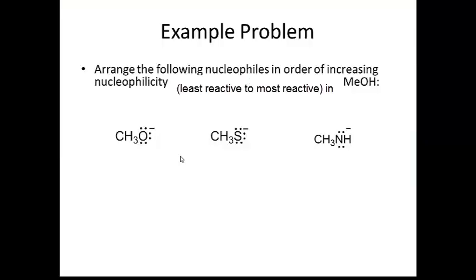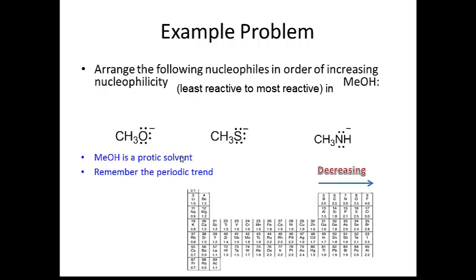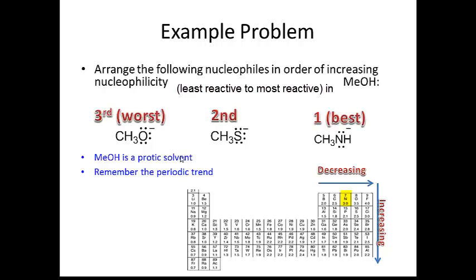Example problem: arrange the following nucleophiles in order of increasing nucleophilicity — least reactive to most reactive on a scale of one to three, where one is most reactive. The solvent is methanol, a polar protic solvent. Nucleophilicity decreases left to right and increases top to bottom. Nitrogen is in group five, further to the left than oxygen, so nitrogen is the best nucleophile. Sulfur is under oxygen and nucleophilicity increases going top to bottom, so sulfur is second best. The worst of the three in methanol is the methoxide anion.